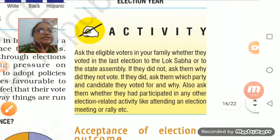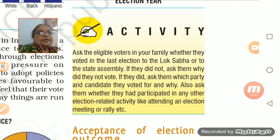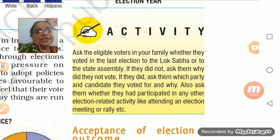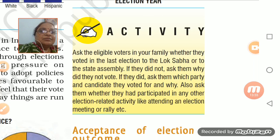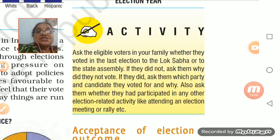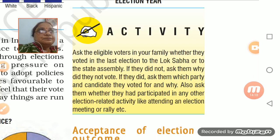There is an activity given here: ask people in your house — mom, dad, siblings, relatives — did they participate in the election? If they did not participate, why did they not vote? If they have voted, which party did they vote for? Did they participate in any other election-related activity like attending an election meeting? For example, if the Prime Minister Narendra Modi is coming to Varanasi to interact with voters and participate in the election process.